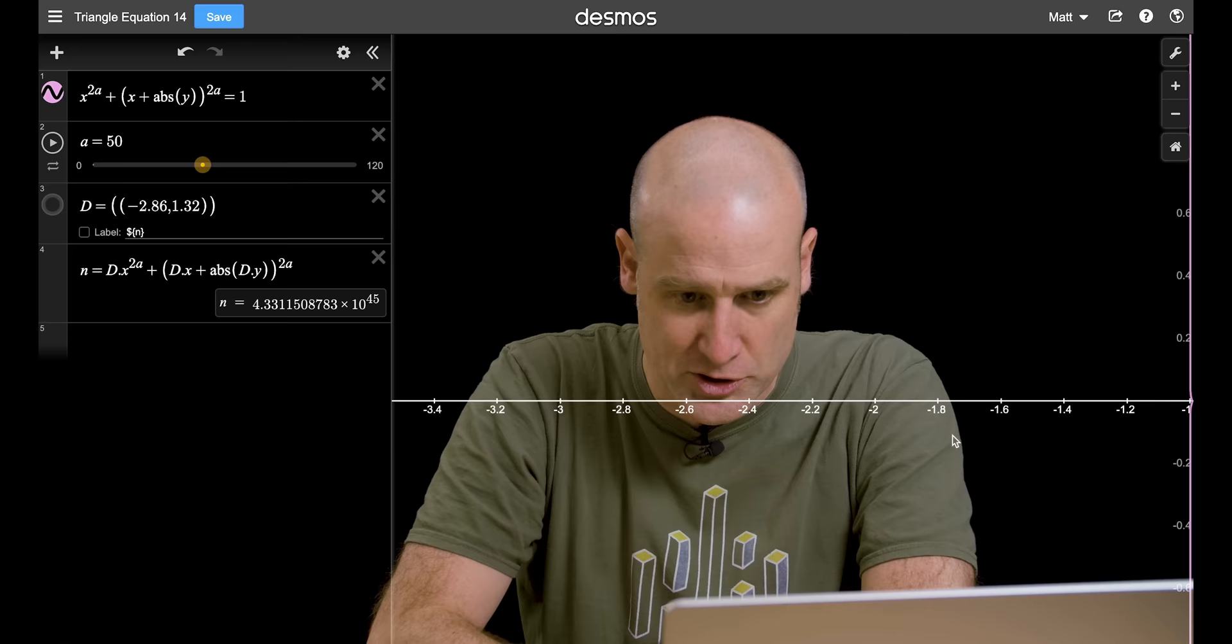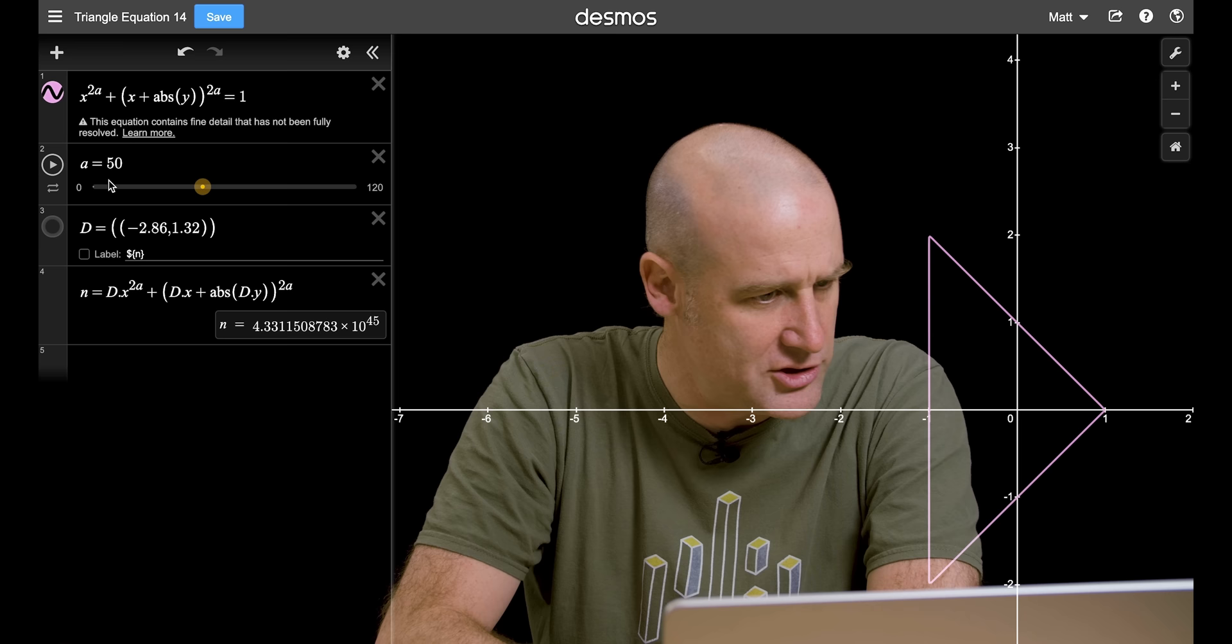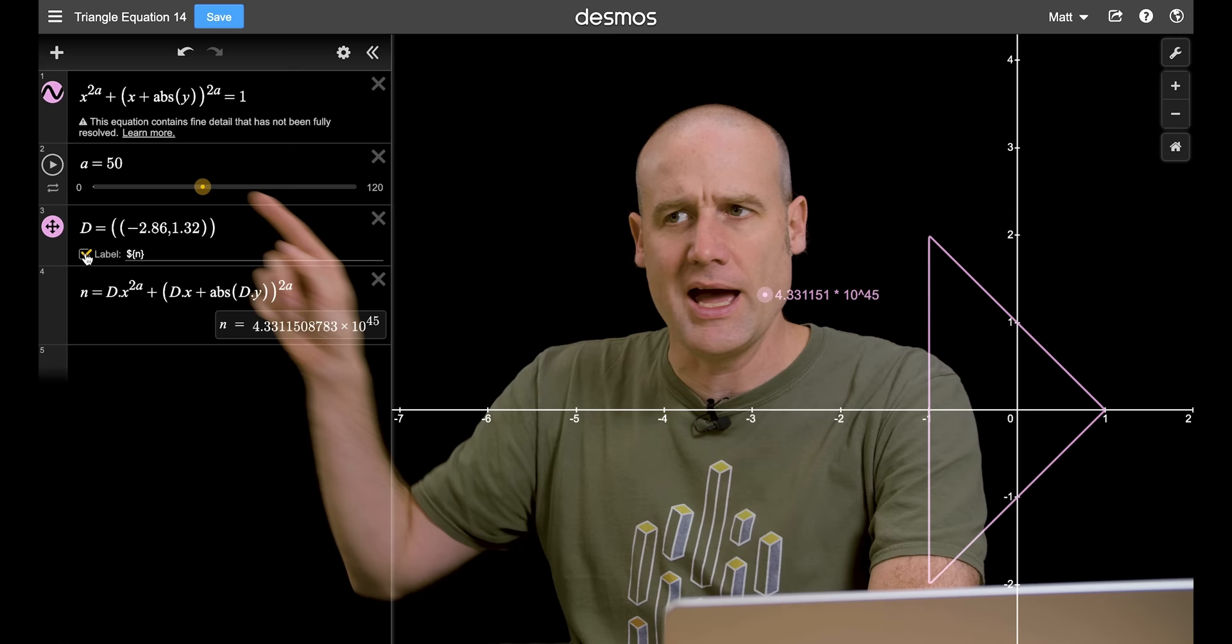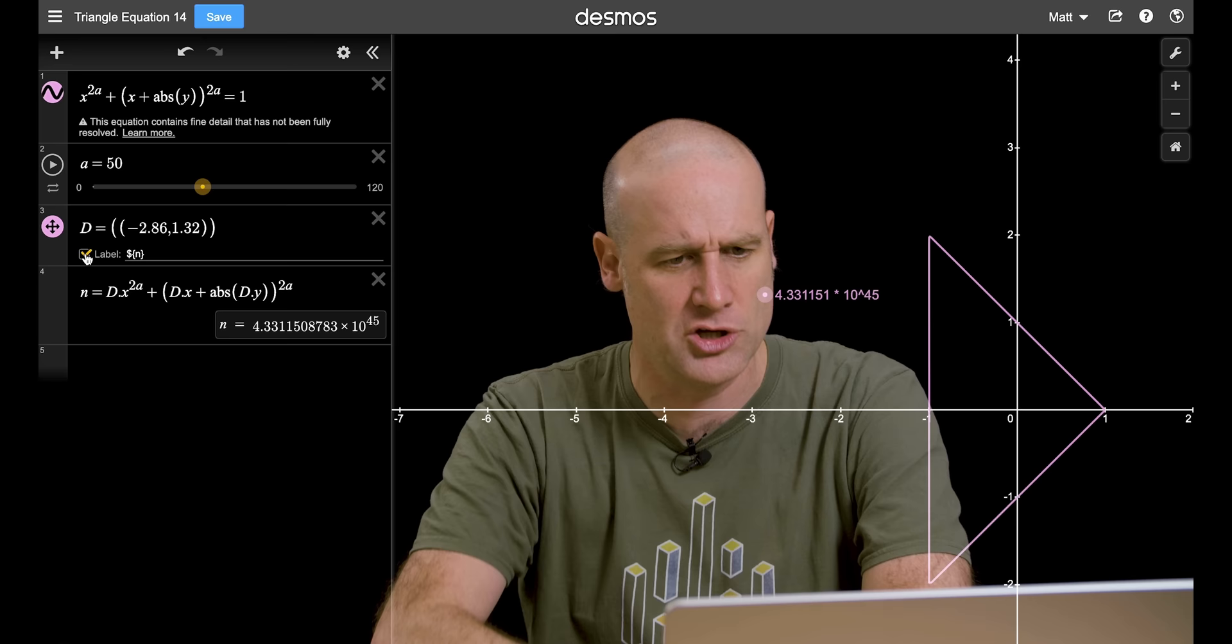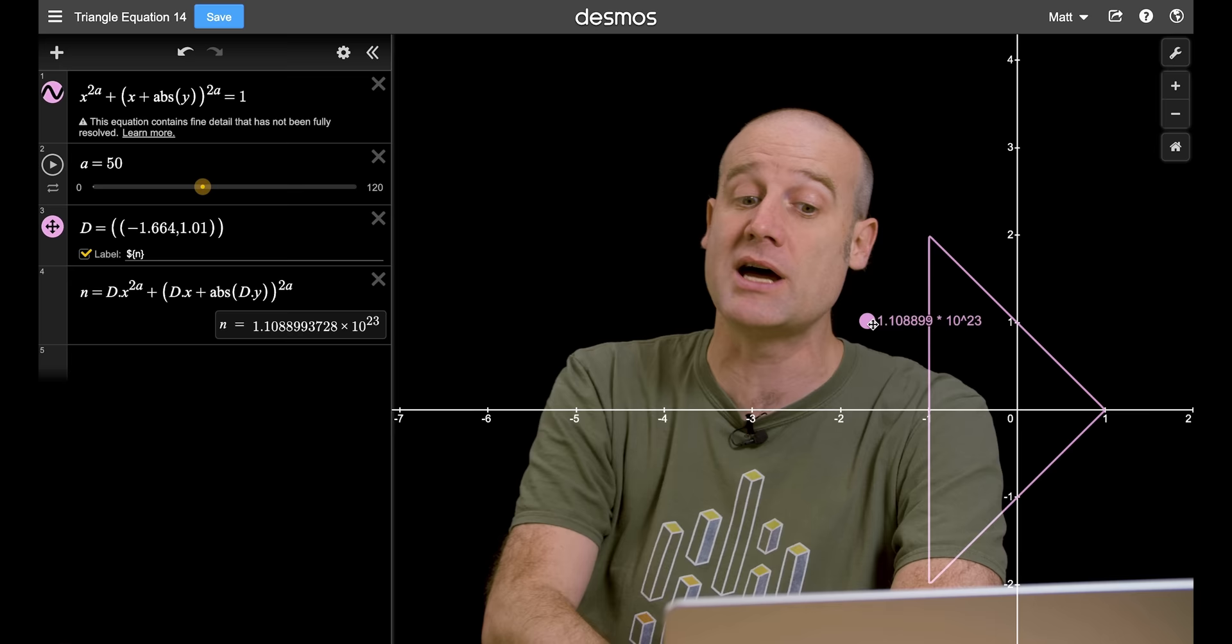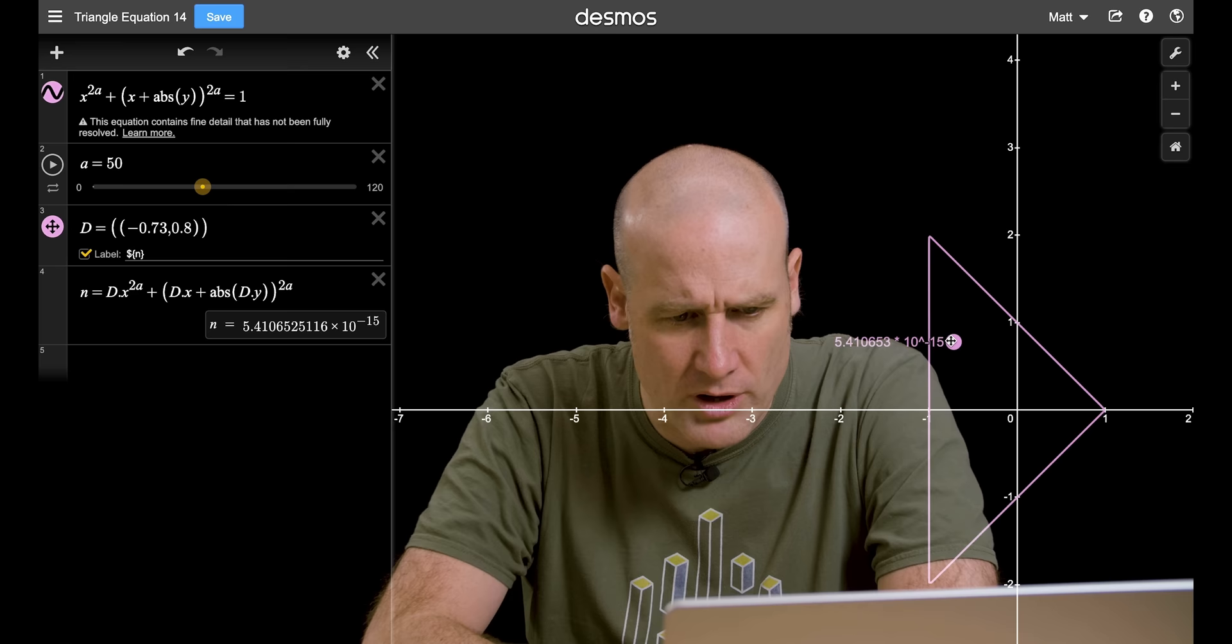And what I can do is I can turn on a dot here and label it. So it's evaluating that equation at whatever point this dot is, displaying the value you get from that equation. And this only displays if it equals 1. Currently it's very much not 1, it's a huge number. If I drag it around out here, it's just some massive number. If I move it inside the triangle, it's a tiny number, 10 to the negative 17, 10 to the negative 56. But if I put it right on the line, that's where it equals 1.